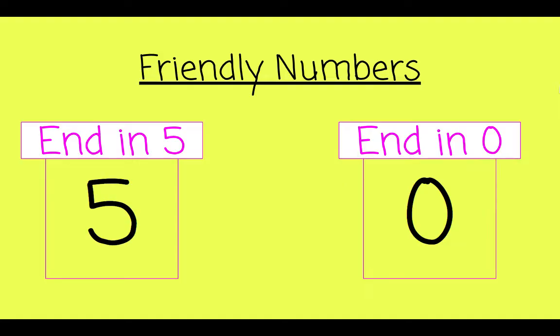Friendly numbers are numbers that end in 5 and end in 0. These numbers are easiest to work with, which is why we call them friendly numbers.